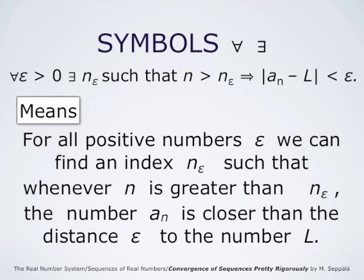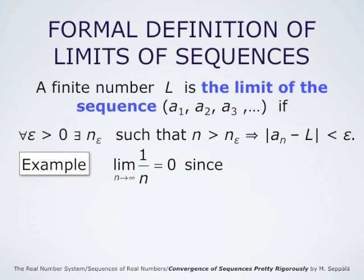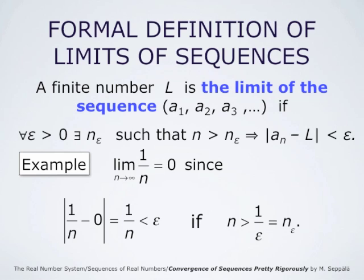This is the formal definition of getting arbitrarily close. To illustrate the use of this formal definition, we next show that the limit of 1/N is 0. This limit is 0 because the absolute value of 1/N minus 0 is just 1/N, and this is less than epsilon if N is larger than 1/epsilon. So in this formal definition of limits, we may take N_epsilon to be just 1/epsilon. This is well defined for any positive number epsilon. Therefore, we found for any positive epsilon a number N_epsilon such that whenever N is larger than N_epsilon, the absolute value of 1/N minus 0 is less than epsilon, and this means the limit of 1/N as N goes to infinity is 0.